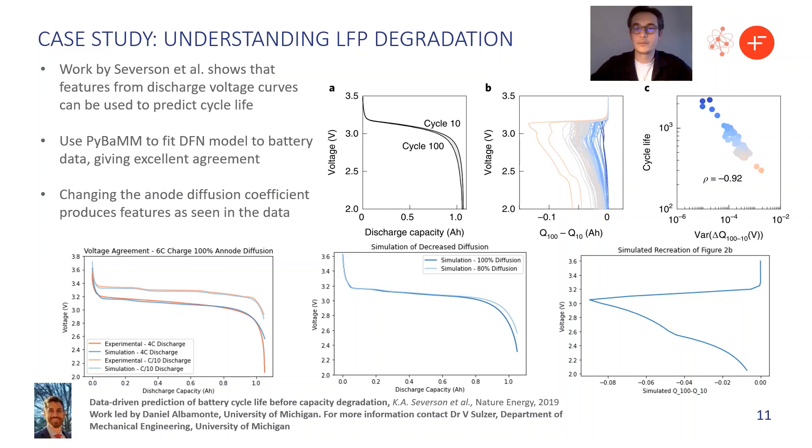The final example we've got here is some work done at Michigan to understand degradation in LFP. Here PyBaMM was used to simulate a Doyle Fuller Newman model. And this was fitted to some experiments and gave a really good agreement and helped understand how the diffusion coefficient in the anode could produce some of the features seen in the experiments. This is a nice example of using PyBaMM to do some exploratory work to try and understand the influence of parameter values on the physical behaviour you're seeing in experiments.